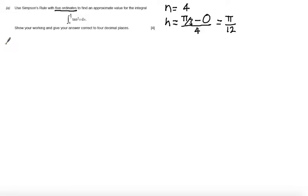Next we construct a table. n will represent the number of ordinates, xₙ represents the values substituted into the function, and yₙ represents the y values outputted by the function.